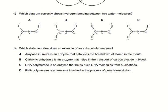Which diagram correctly shows hydrogen bonding between two water molecules? The dotted line represents hydrogen bonding with partial positive and partial negative charges. In option B, the hydrogen carries a partial positive charge and the oxygen carries a partial negative charge — which is correct. Hydrogen bonds are not permanent; they involve partial charges, not full charges. So option B is the right answer.